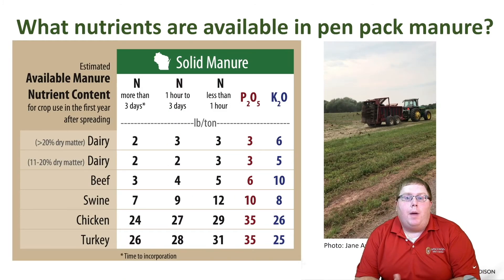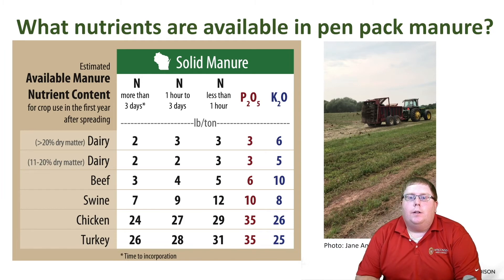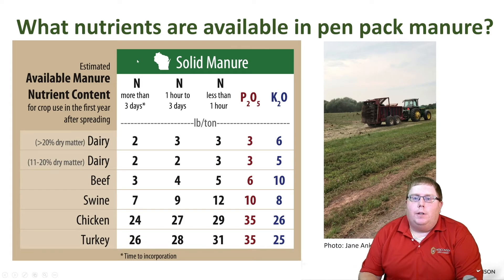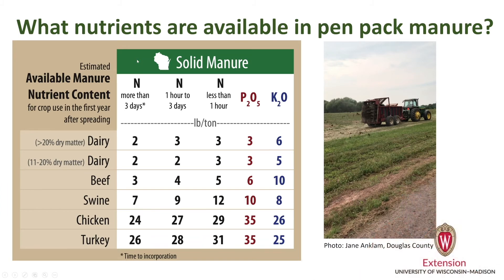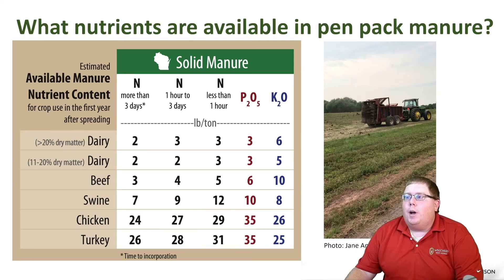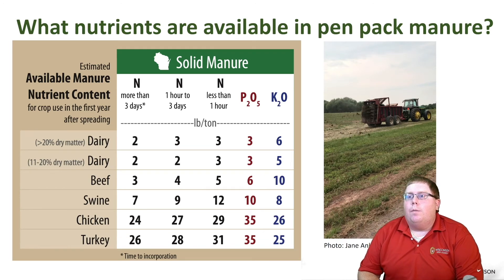So what are our nutrients for bed pack manure? Bed pack manure is defined as a drier manure, so we use the solid manure table. We pick our livestock species, and since bed pack manure is often not incorporated, we'd use a two-pound nitrogen credit per ton of manure not incorporated, plus three pounds of P2O5 (plant available phosphorus) and six pounds of K2O (plant available potassium) — for dairy manure, for example.